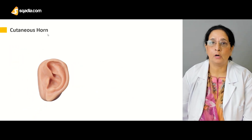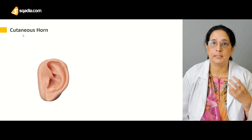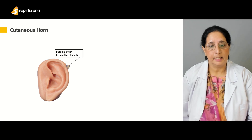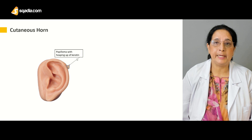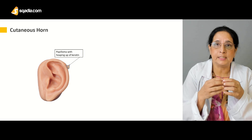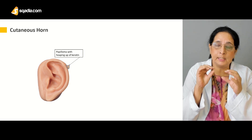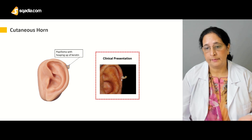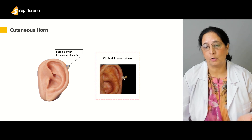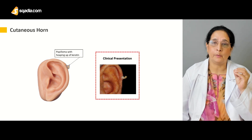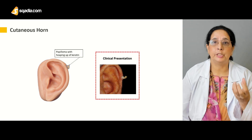Then we have the cutaneous horn. Cutaneous refers to skin, and horn refers to its horn-like appearance. It is essentially a papilloma with heaping up of keratin — a protein in the skin. When there is a buildup of keratin on the skin, it forms the cutaneous horn. Its resemblance to an animal horn gives it the name.